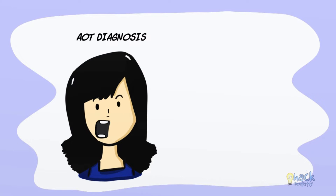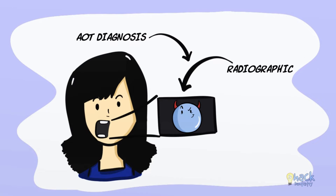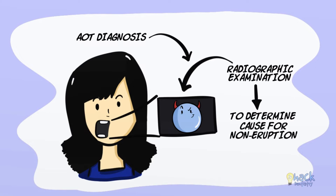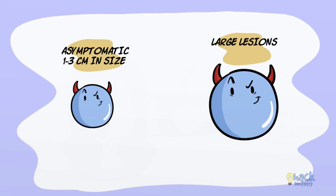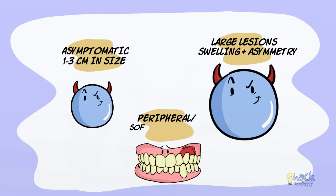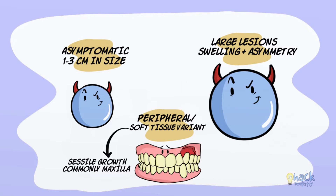Most cases of AOTs are diagnosed either during a routine radiographic examination or when radiographs are taken to determine the cause of a tooth's non-eruption. They are usually asymptomatic and vary between 1–3 cm in size. However, large lesions have been reported and may cause swelling of the jaws and facial asymmetry. A peripheral or soft tissue variant of AOT has also been reported and usually occurs as a small cyclic growth on the gingiva, more commonly on the maxilla than on the mandible.